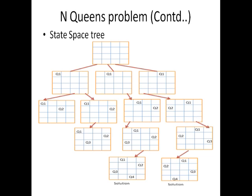So we place queen 3 in the last position. Checking the constraints: Queen 1 — no queen in rows, columns, or diagonal. Queen 2 — no queen in rows, column, or diagonal. The only possible solution for placing queen 4 is the 2nd position, so we place queen 4 in the 2nd position.